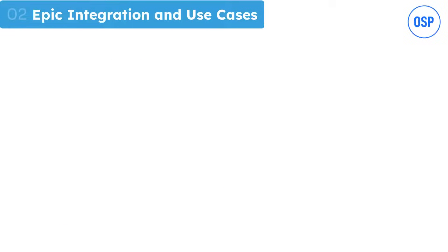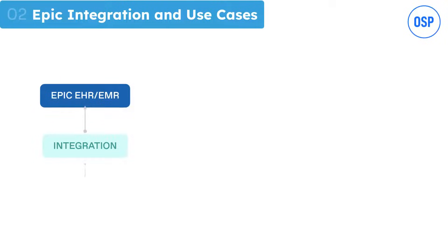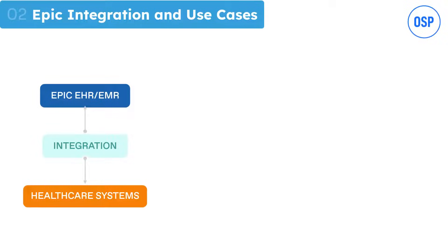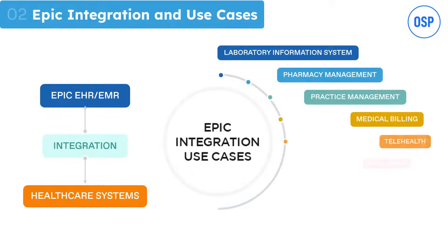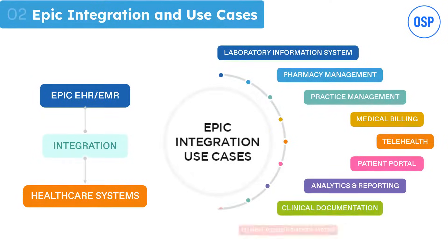Now it's time to hit the main chord and talk about Epic integration. Epic integration simply means connecting Epic's EHR or EMR systems with providers' healthcare software systems. Linking two systems ensures seamless data flow, which further helps clinicians in decision making and other operations. The real use cases can make the Epic integration concept easier to understand — take a look at the illustration.